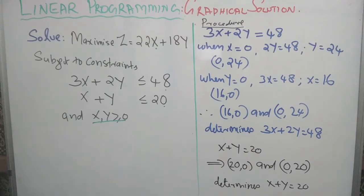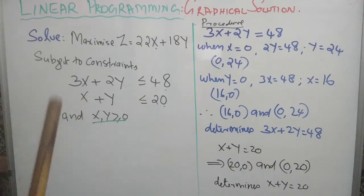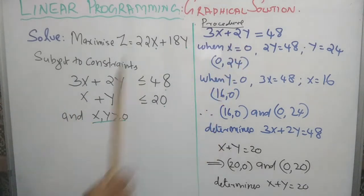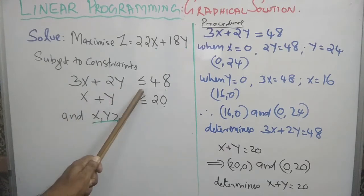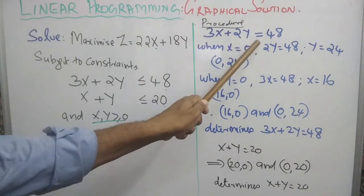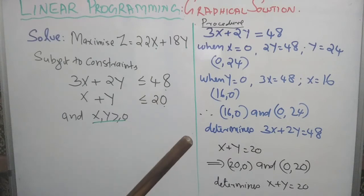The constraints are represented by straight lines since the relationship is linear. Each constraint is represented by a straight line. The first step in graphical solution is that the inequality is changed into equality: for example, 3x plus 2y less than or equal to 48 is treated as 3x plus 2y equals 48.